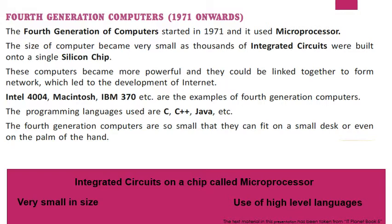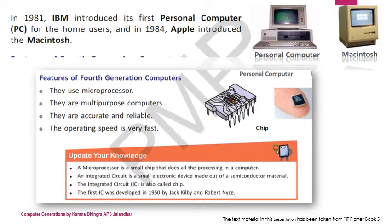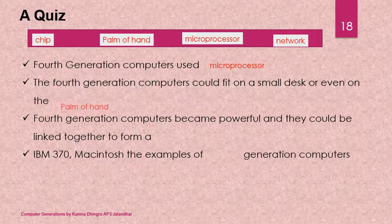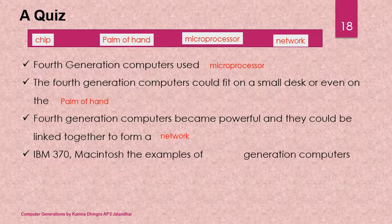High-level programming languages such as C, C++, and Java were used in the beginning, and nowadays Python, C#, Visual Basic, etc. are more in use. Fourth generation computers use microprocessors, are multipurpose, more accurate, reliable, and have very fast operating speeds. In 1981, IBM introduced the first personal computer for home users. Quiz recap: These computers could fit on a small desk or even in the palm of a hand. Examples include IBM 370, Macintosh, etc.